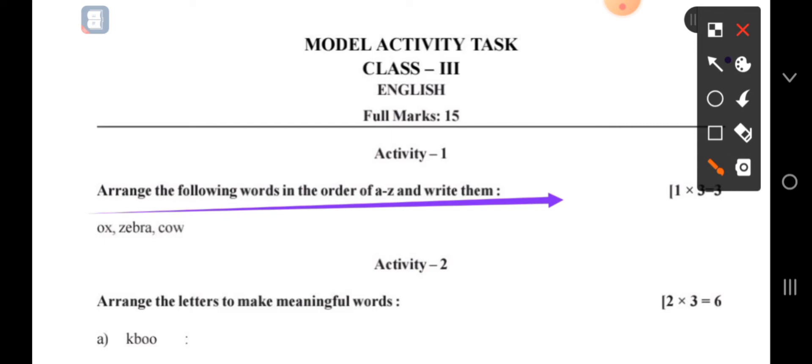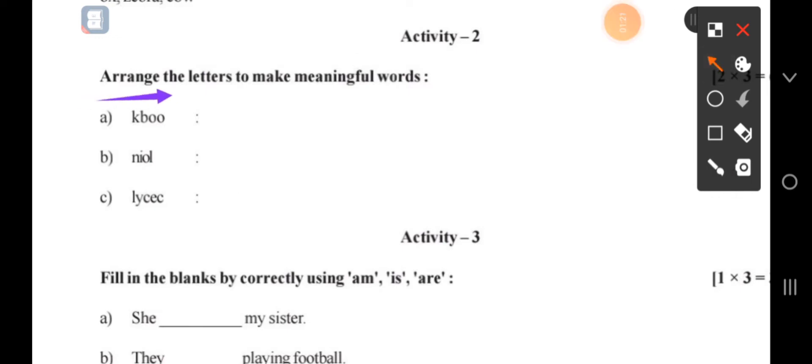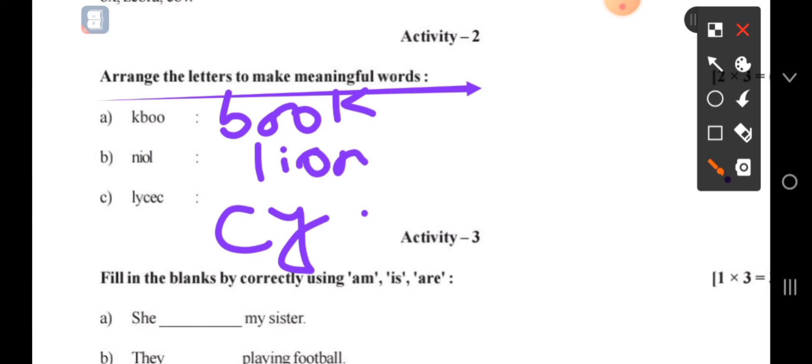The words are ox, zebra, cow. Next answer is book. Next answer is lion. Next answer is bicycle, B-I-C-Y-C-L-E.